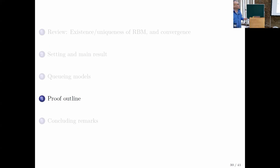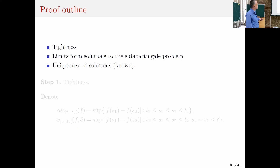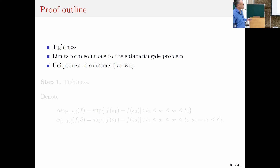So I'd like to give an outline of the proof. The proof goes by the uniqueness method: you start by proving tightness and therefore pre-compactness for the rescaled processes, prove that limits form solutions to the sub-martingale problem, and then use the fact that uniqueness of solutions holds. Therefore the limit must exist and equal that unique solution.